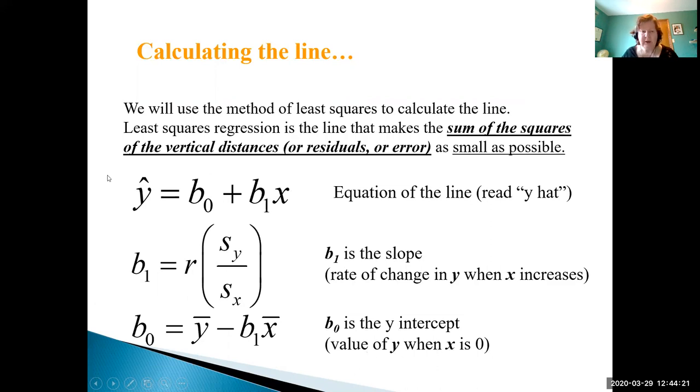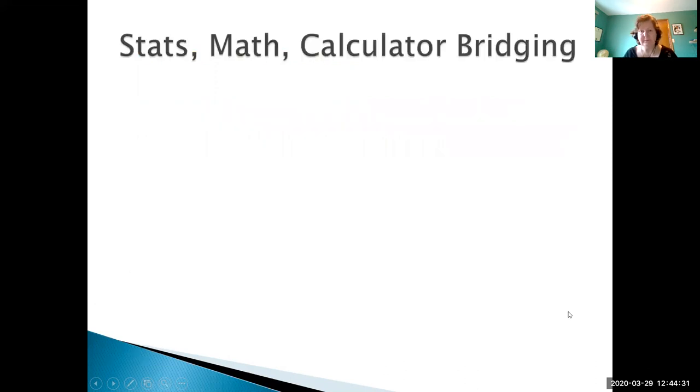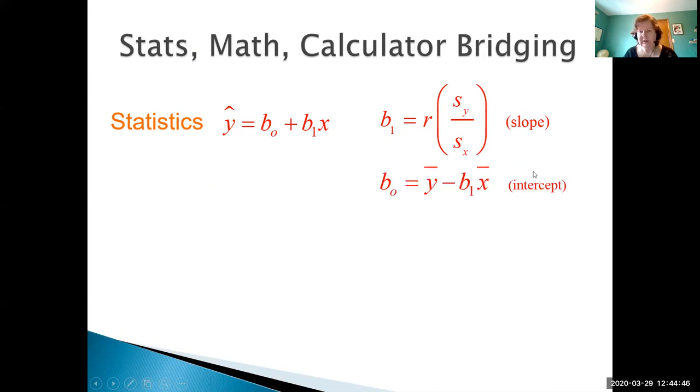For our purposes, we don't have to know how to use these two bottom formulas. We will be getting these different values, the intercept and the slope, right off our calculator or Excel. There's a bridge between statistics, math, and calculators. In stats we have the symbol y hat equals b0 intercept plus b1 slope times x, and we can see different ways of calculating the slope and the intercept.